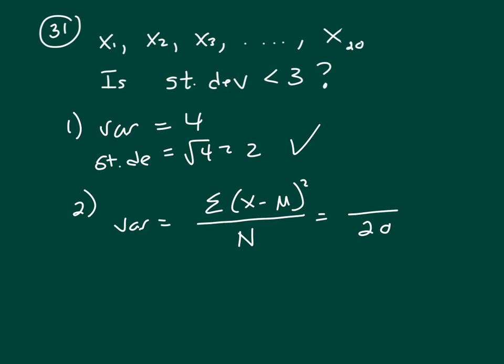And it says the difference, which is subtraction, between the mean and that measurement, that means that x value, is 2. So we know the value of this is 2, and of course we have to square it.